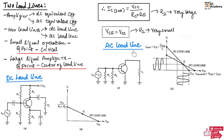Now let us understand the AC load line. Figure C shows the AC equivalent circuit of the voltage divider bias amplifier shown in Figure A. Since the emitter is connected to ground, resistor RE does not have any effect on AC operation, and hence RE is removed. Figure D shows the AC load line along with the DC load line. The cutoff point and saturation point of the AC load line are different from those of the DC load line.